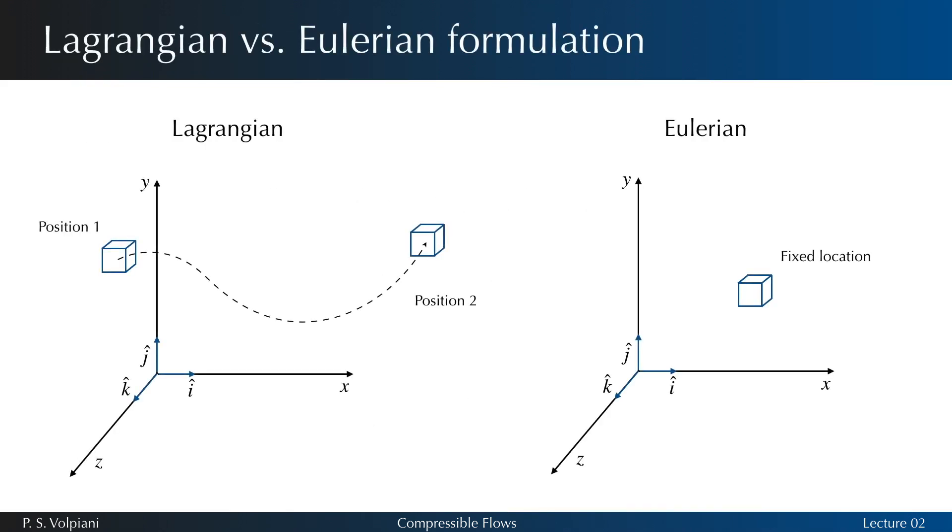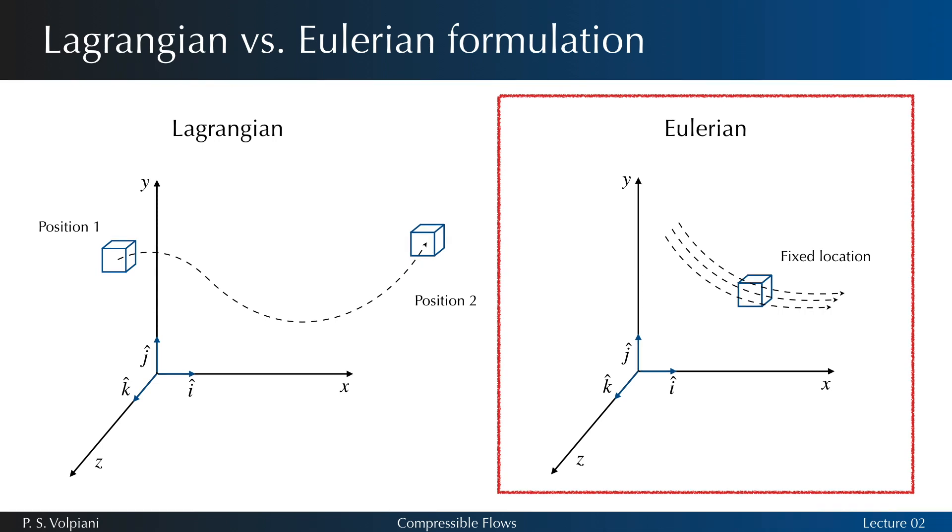In most gas dynamics problems, it is more convenient to examine a fixed region in space, or a control volume. Since tracking individual particles is very hard and sometimes impossible, we focus on what happens at a fixed point as different particles go by. That's the principle of the Eulerian approach.